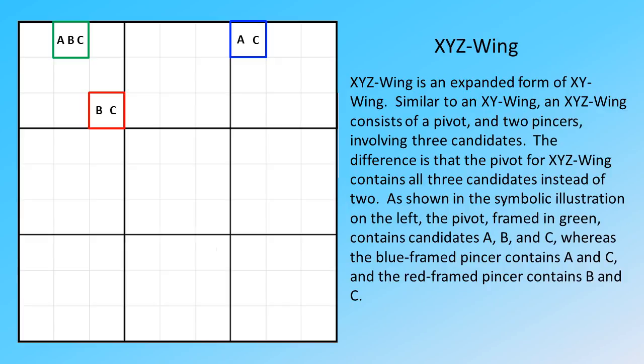The difference is that the pivot for XYZ Wing contains all three candidates instead of two. As shown in the symbolic illustration on the left, the pivot, framed in green, contains candidates A, B and C, whereas the blue framed pincer contains A and C, and the red framed pincer contains B and C.